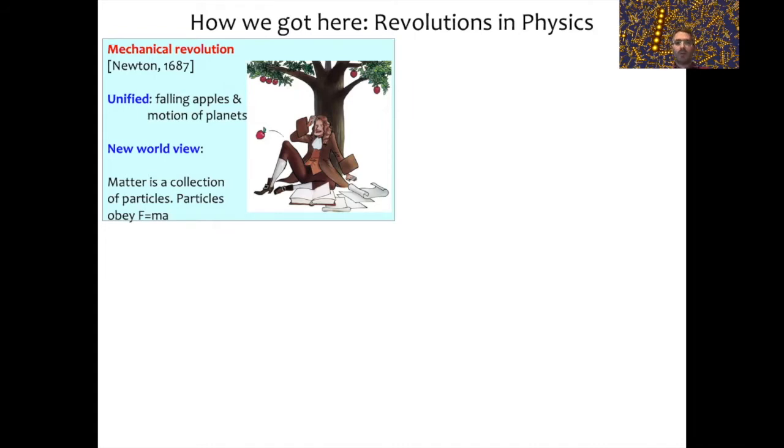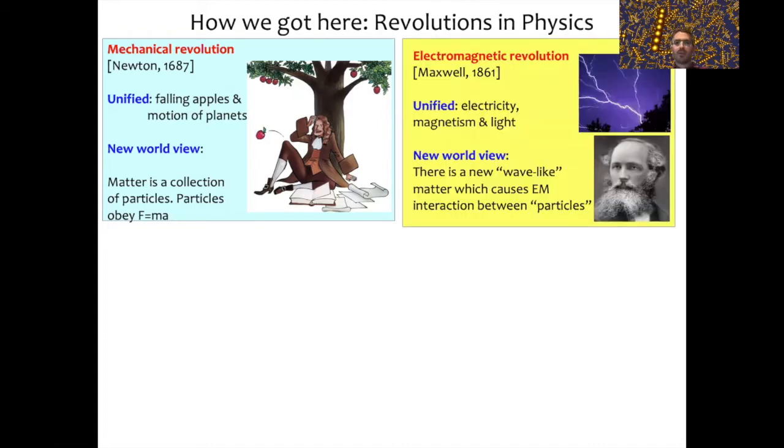In the 19th century, we have the electromagnetic revolution, which was due to James Clerk Maxwell. Something similar happened then. People were aware of the fact that there existed things like electricity, magnetism, and light, but they didn't see that there were necessarily any deep connections within these things.